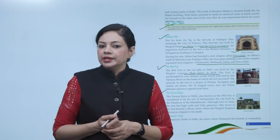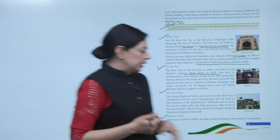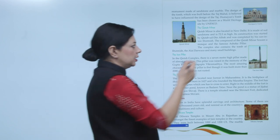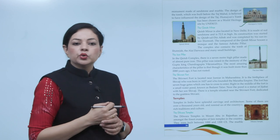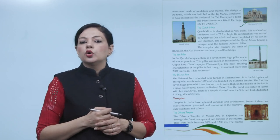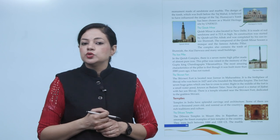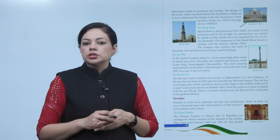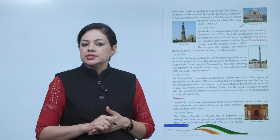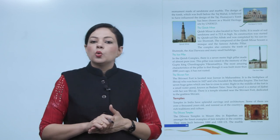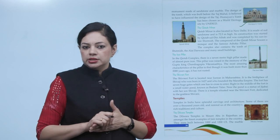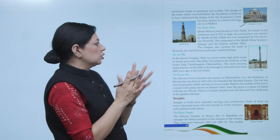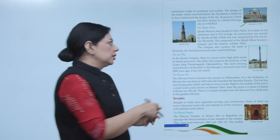Next is Humayun's Tomb in Delhi — the place where Humayun lies buried — a beautiful monument made of sandstone and marble. The design of the tomb, which was built before the Taj Mahal, is believed to have influenced the design of the Taj. Humayun's Tomb has been chosen as a World Heritage Site by UNESCO. Aisa maana jaata hai ki Taj Mahal ka kuch idea Humayun's Tomb se liya gaya hai.